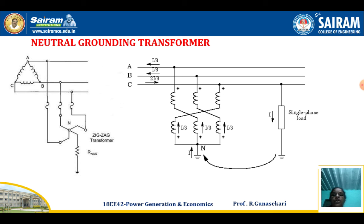The neutral grounding transformer and earthing transformer are both similar. In a star connected three phase system, the neutral is connected to the resistance. But in a delta connected three phase system, the zigzag transformer is connected to each terminal of the delta connected system, and then the neutral of the zigzag transformer is connected to the ground. The current flowing through the a phase equals i/3, b phase equals i/3, and the total current flowing through the c phase is 2i/3, where i is the current through the single phase load. In this case, the neutral is connected to the ground through resistance, which is known as the neutral grounding transformer.